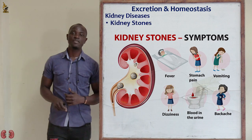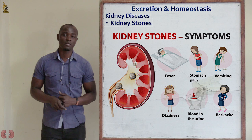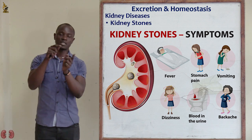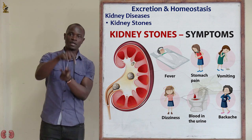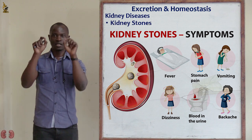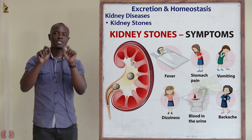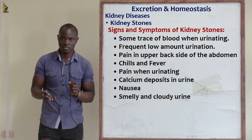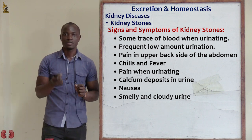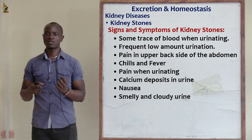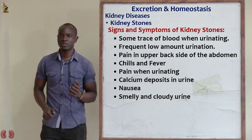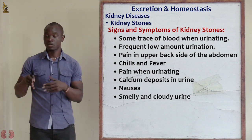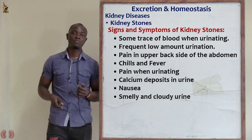What are the symptoms of kidney stones? The first is blood in urine. This happens because as the kidney stone is forced down the pelvis through the ureter, it scratches the walls of the ureter, making bruises in the blood vessels and ureter. These bruises release blood, which appears in the urine.